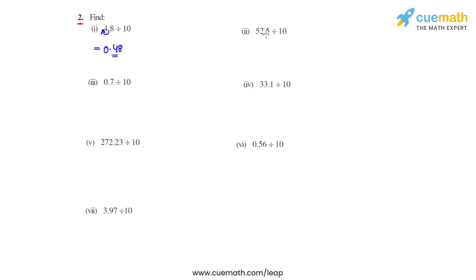Coming to the second bit, we have 52.5 divided by 10. So the decimal will move one place towards the right and will now be between 5 and 2. The answer will become 5.25 for the second bit.